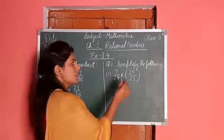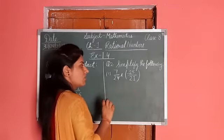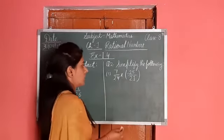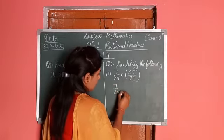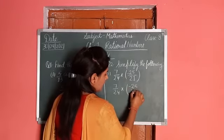Next question is simplify the following. Here two rational numbers are given, so we have to find their product. 7 upon 24 into minus 25 upon 21.